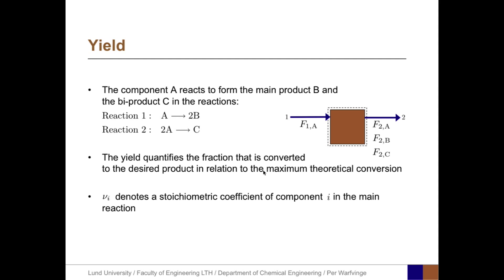Let nu I denote the stoichiometric coefficient of component I in the main reaction. That is, 1 for A and 2 for B. Then the yield is defined as F2B divided by the stoichiometric coefficient for B, and F1A divided by the stoichiometric coefficient for A. So if all of A is converted to B, the yield will be 1.